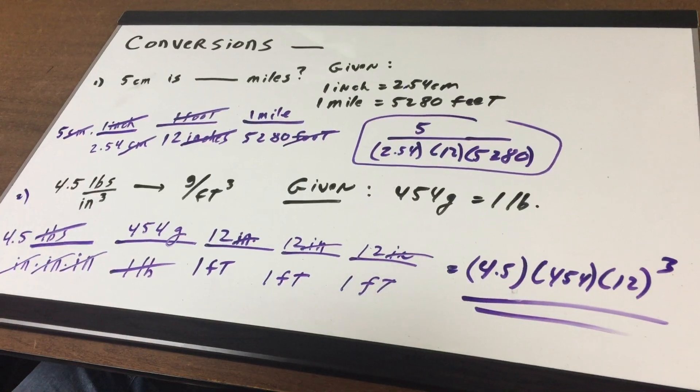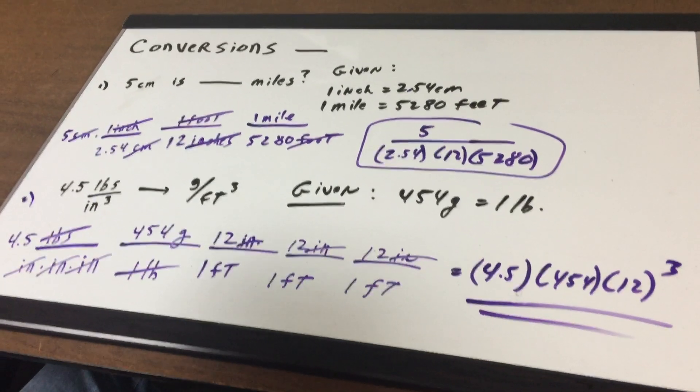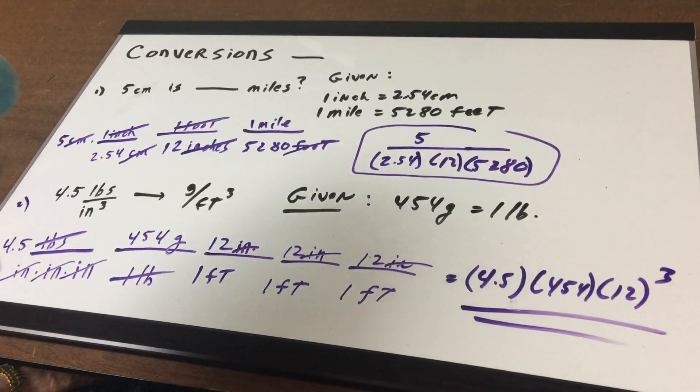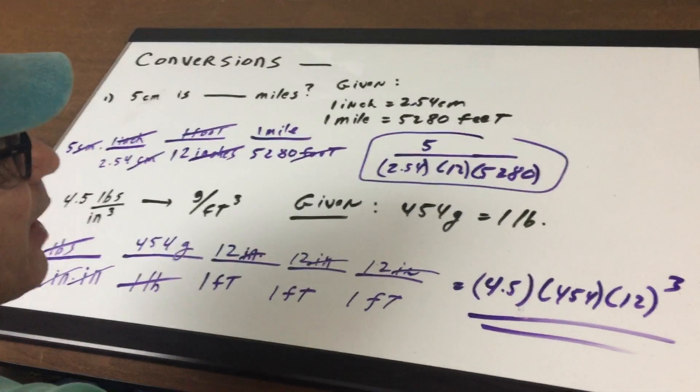This is a short bed type of question. We got one in the DAT Destroyer. Make sure you know how to do what's called the double conversion. I hope this helps on how to do your conversions. Bye-bye.